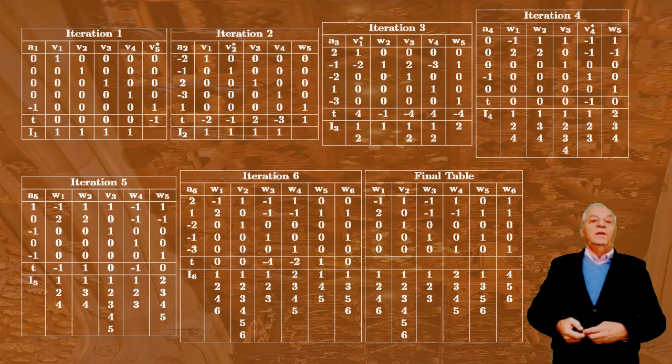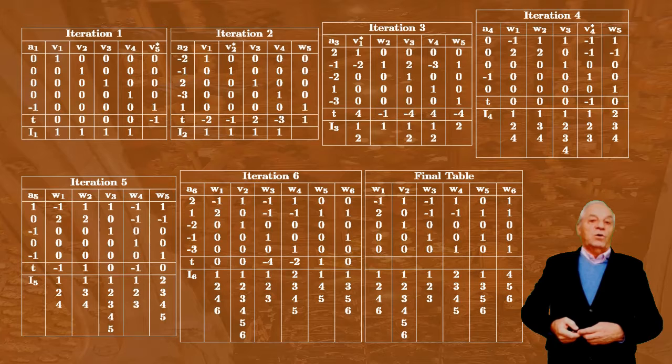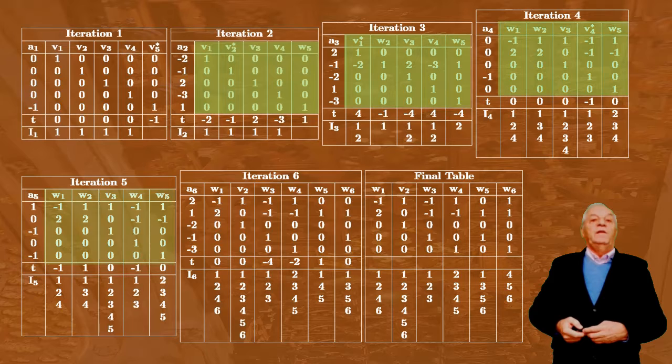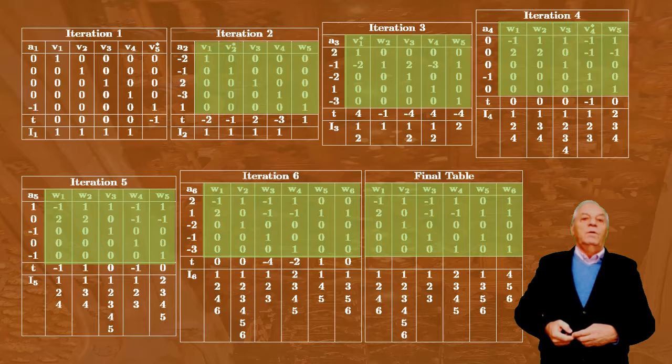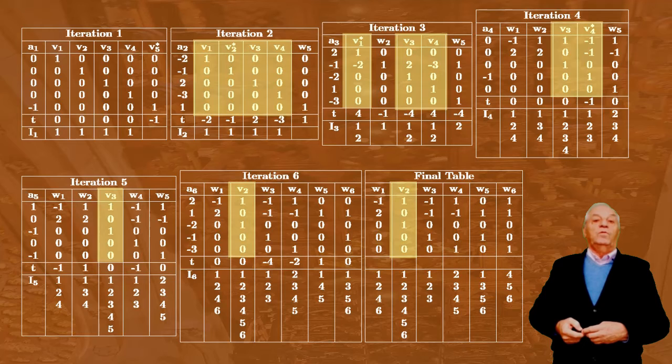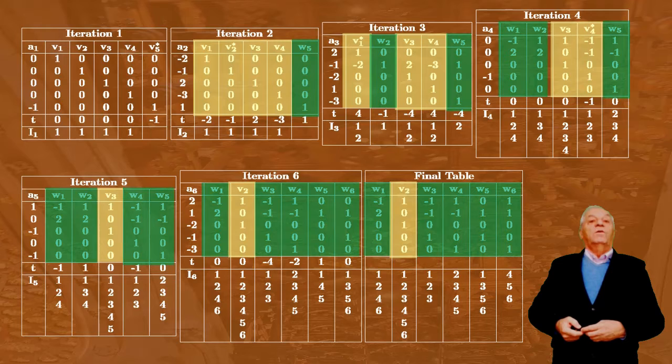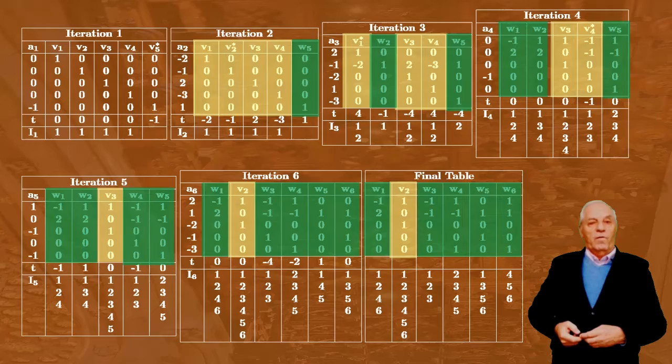After executing the program, we get a set of tables: the initial table and tables containing the dual cones of the cones generated by the first column vector, the first two, the first three, and so on, until we obtain the final table with the dual of the initial cone. In each table, the columns headed by A-V give the basis of the vector space part of the dual cone, and the columns headed by A-W provide the edges of the acute cone part — that is, we get the cone in the standard simplified form.